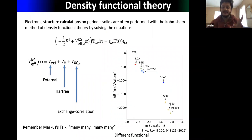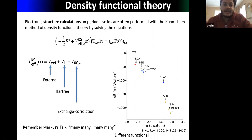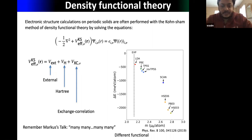In such cases, DFT is best placed to capture this material information. In a Kohn-Sham scheme, we solve the Kohn-Sham equations, and the Kohn-Sham potential has three components: external, Hartree, and exchange-correlation.